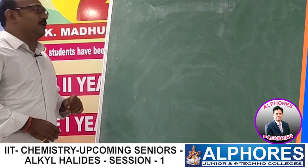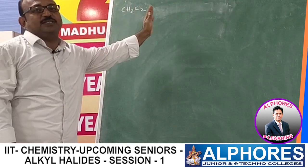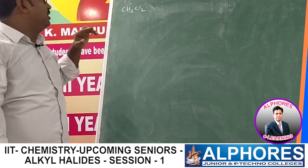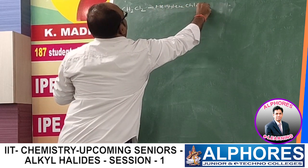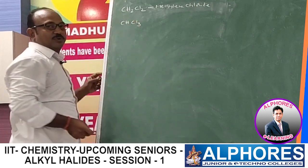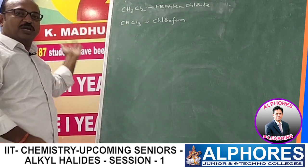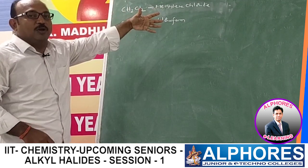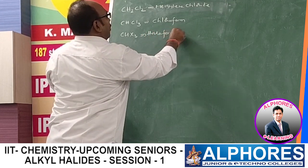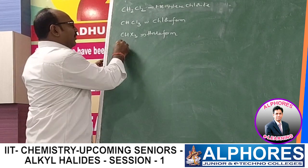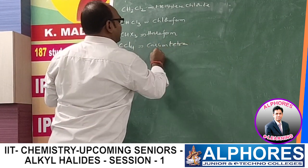Moving to di- and polyhalo derivatives: CH3Cl is chloromethane (methyl chloride); CH2Cl2 is methylene chloride (dichloromethane). With three halogen atoms: CHCl3 is chloroform or trichloromethane; CHBr3 is bromoform; CHI3 is iodoform. The general formula CHX3 is called a haloform. With four chlorine atoms: CCl4 is carbon tetrachloride, used as a non-polar solvent.